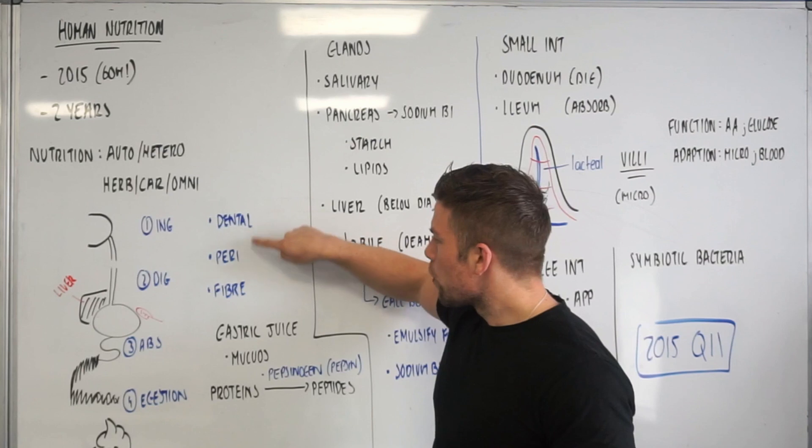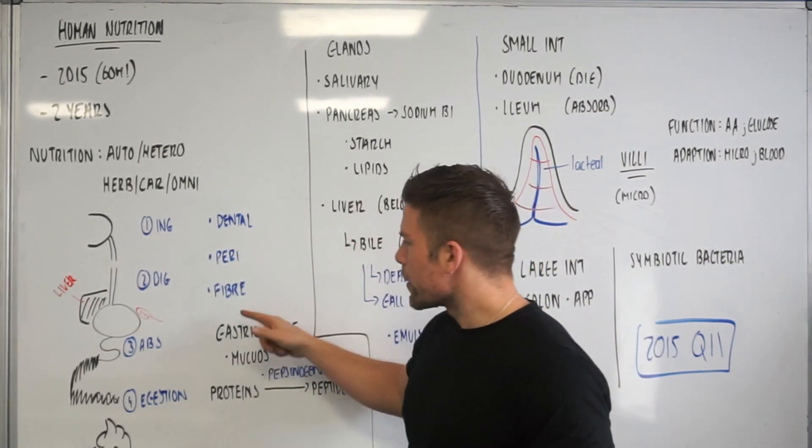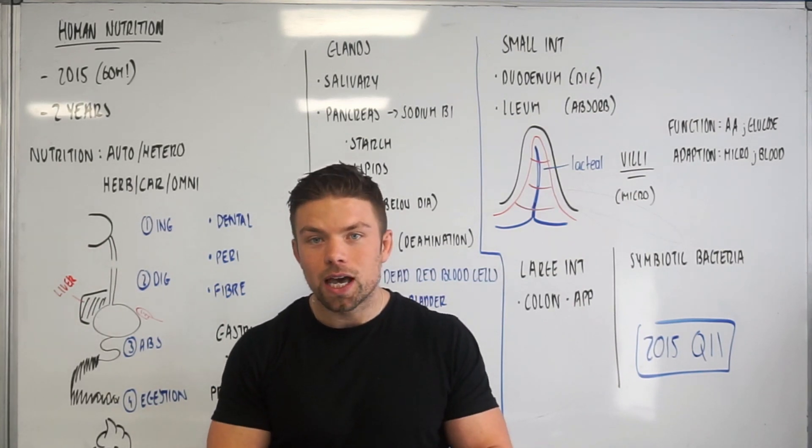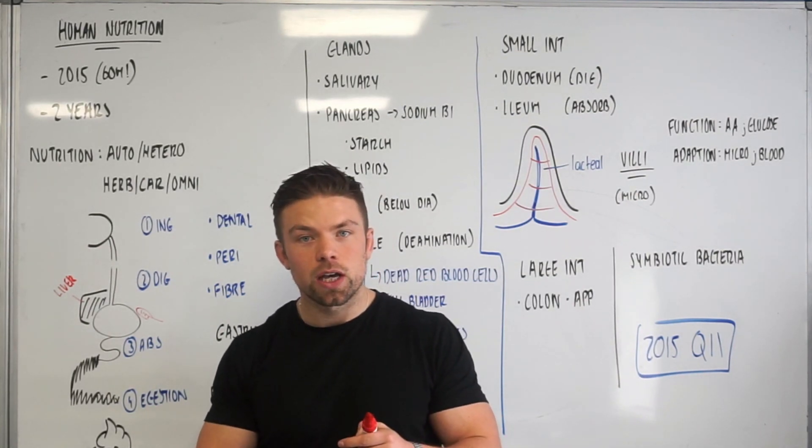What else do I say we need to know? We need to know about the dental formula, we need to know about peristalsis there, we need to know about the role of fiber. So fiber is contained in plant cell walls and it actually acts as roughage and it stimulates peristalsis and it stimulates us to actually go to the bathroom.